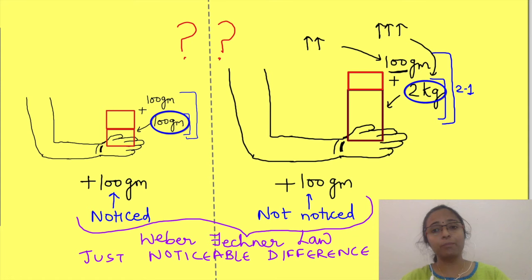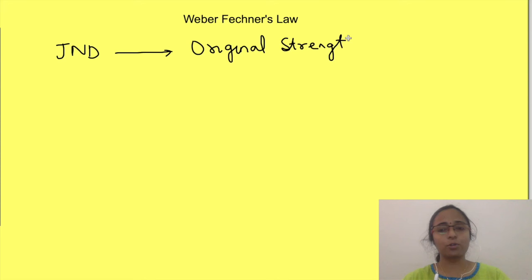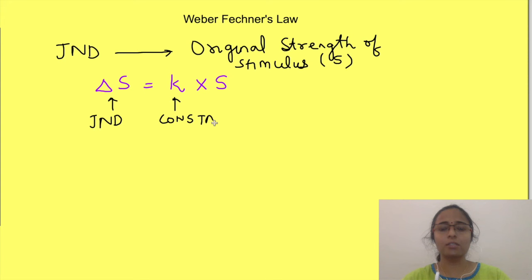This just noticeable difference depends on the original strength of the stimulus and is given by the equation: delta S equals k times original strength, where delta S is just noticeable difference and k is a constant. In short, delta S is a constant fraction of the original stimulus, and this fraction k is different for different sensations. From this equation you can understand that as original strength increases, delta S keeps increasing.